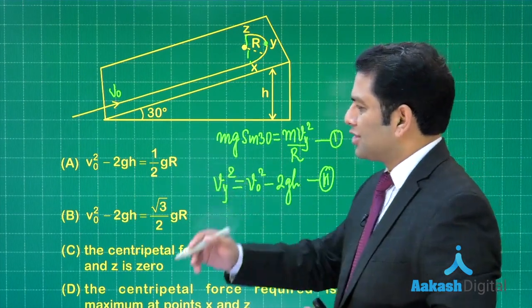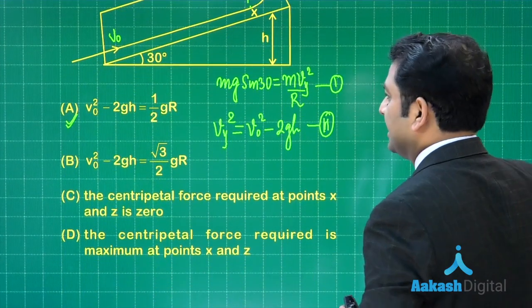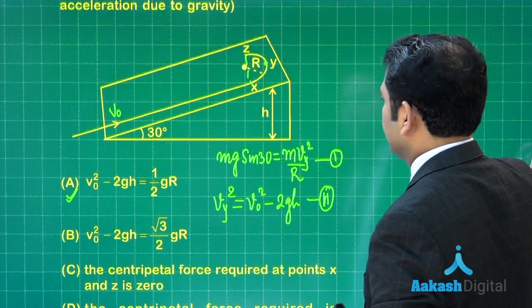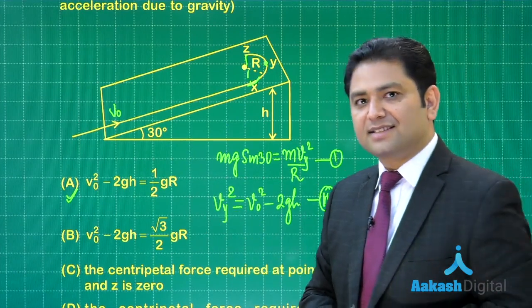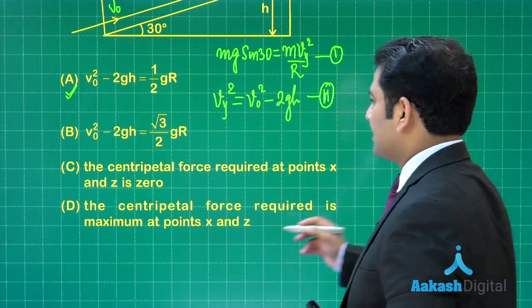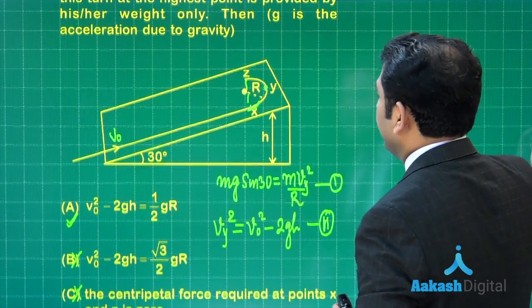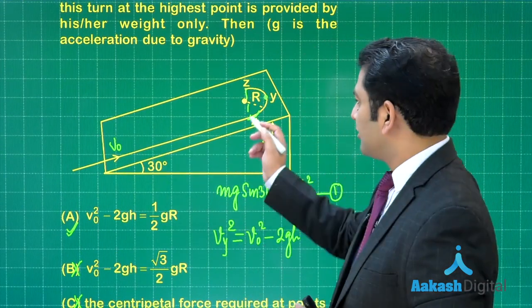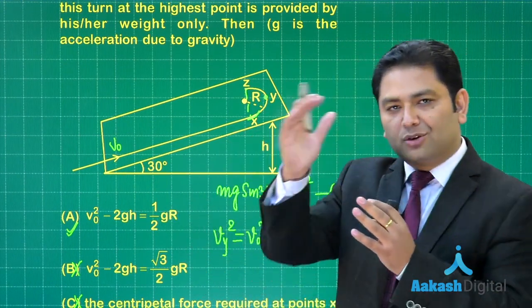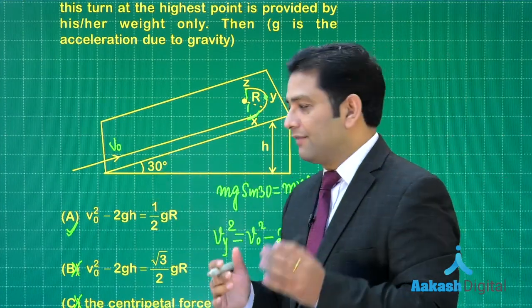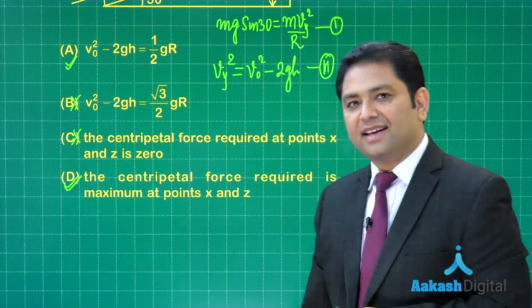You have two equations, solve it. It is straightforward—option number A would be the correct. There are other options as well. The centripetal force required at points X and Z is zero—no, it cannot be, because it starts turning from X, so the centripetal force would not be zero. Option C is already ruled out, and B was not correct either. Centripetal force required is maximum at points X and Z, and that makes sense because the speed is maximum at X and Z with regard to the semicircle. So option number D is the correct one.